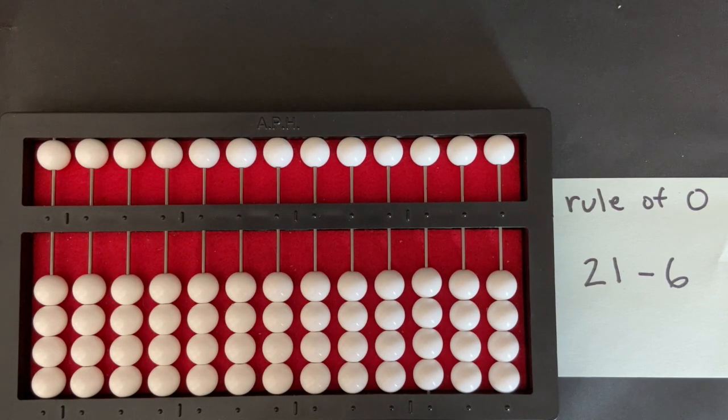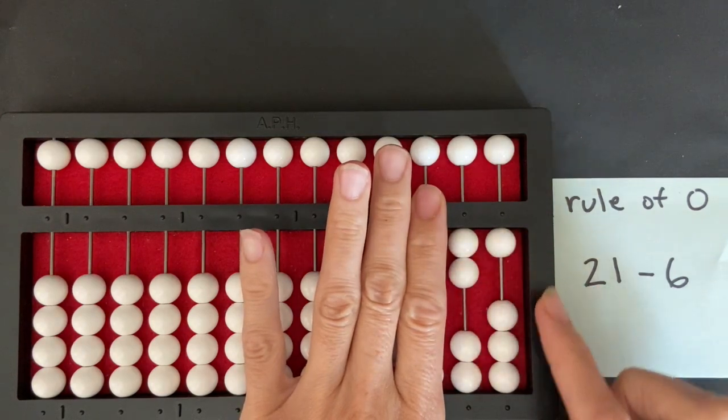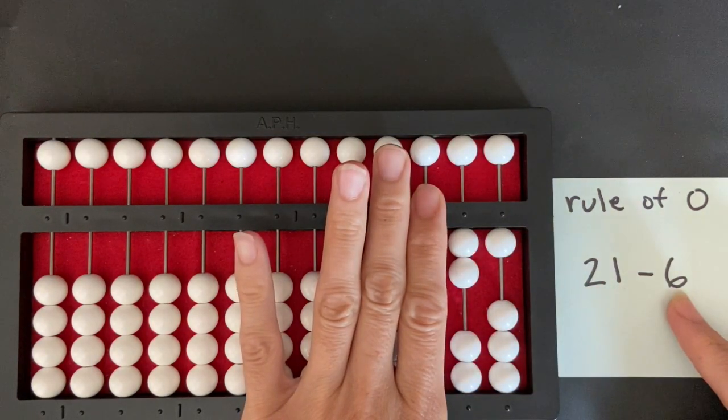So we're going to start by setting 21 on the abacus, two in the tens rod and one in the units rod, and then we're going to subtract six.